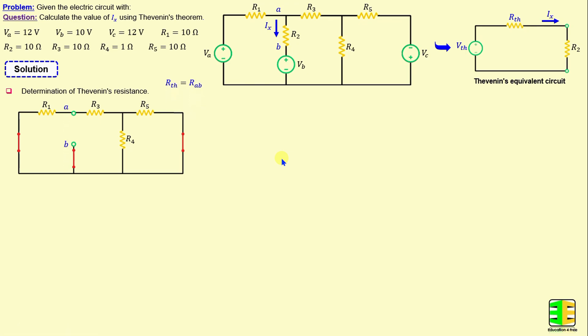That means RTH is equal to the parallel combination of R4 and R5 connected in series with R3, parallel to R1. I will consider Ra is the parallel combination of R4 and R5 connected in series with R3. That means Ra is equal to R4 times R5 over R4 plus R5, plus R3. If we replace the resistors with their numerical values, we get Ra is equal to 10.9 ohms.